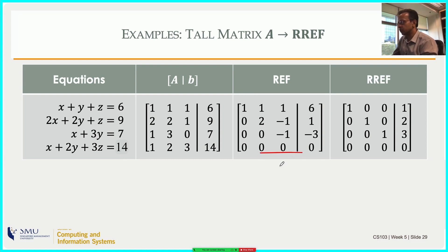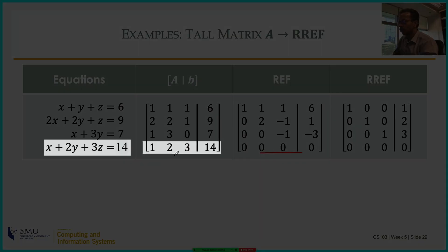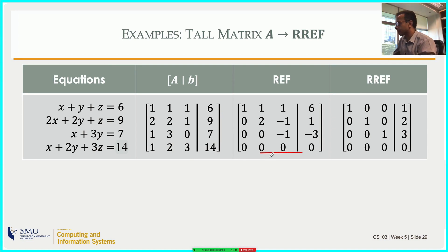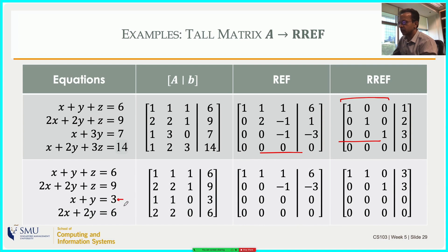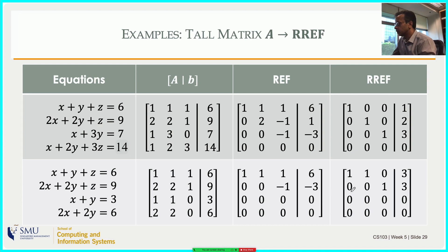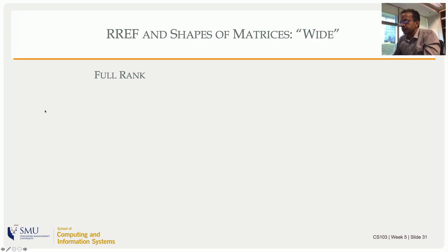Adding a linearly dependent equation (x + 2y + 3z = 14) makes the last row become all zeros in the RREF. The coefficient part shows the identity matrix on top with one zero row below. If two equations are linearly dependent, the matrix has rank 2 out of a possible 3, leaving a -1 pivot that is scaled to 1, used to zero elements above, and the RREF shows an identity matrix with a free variable column mixed in.